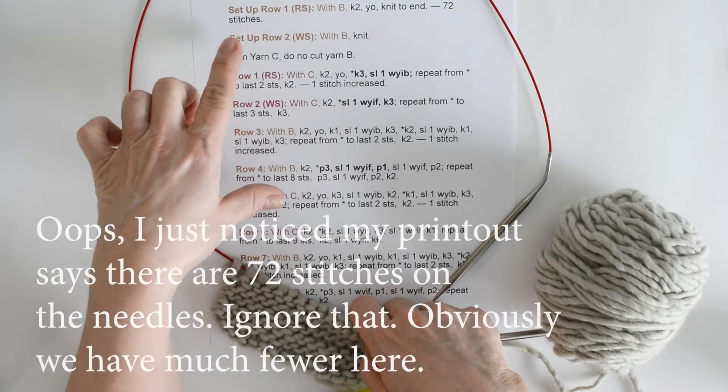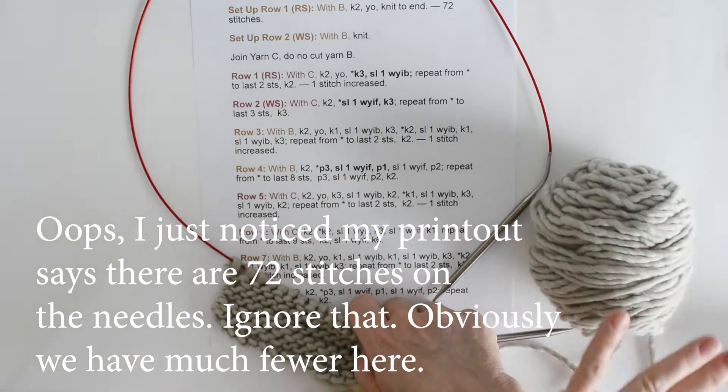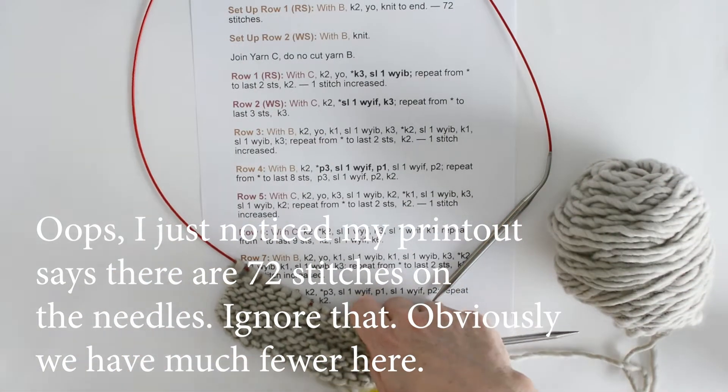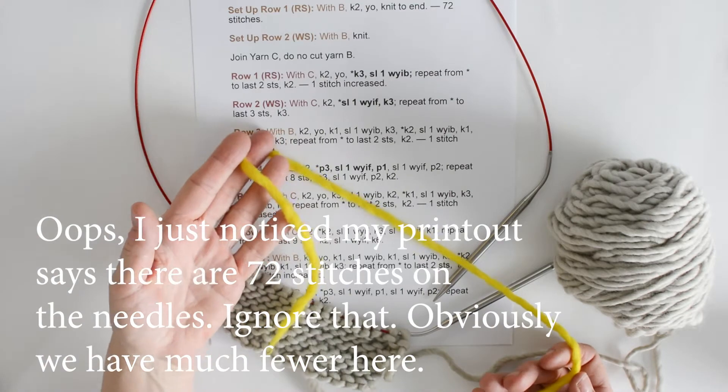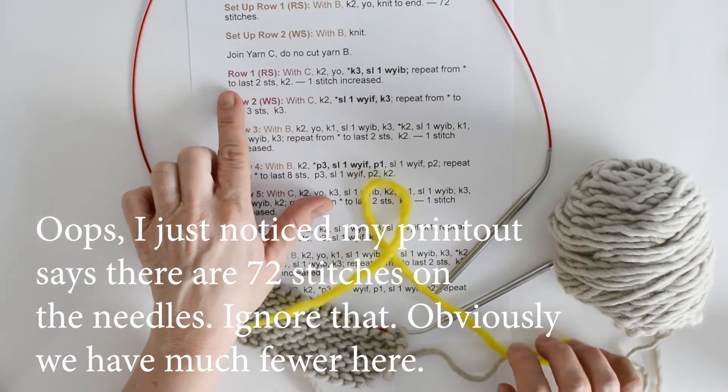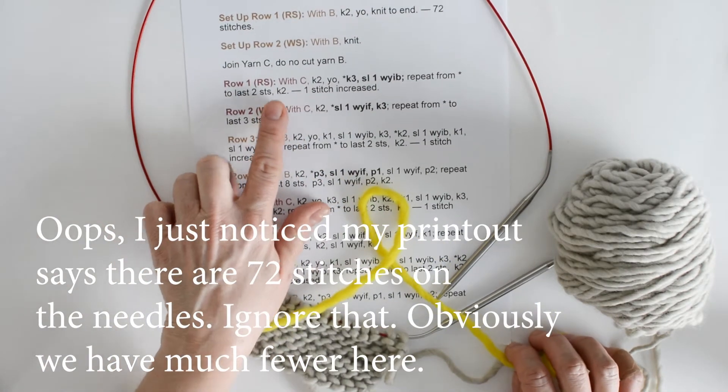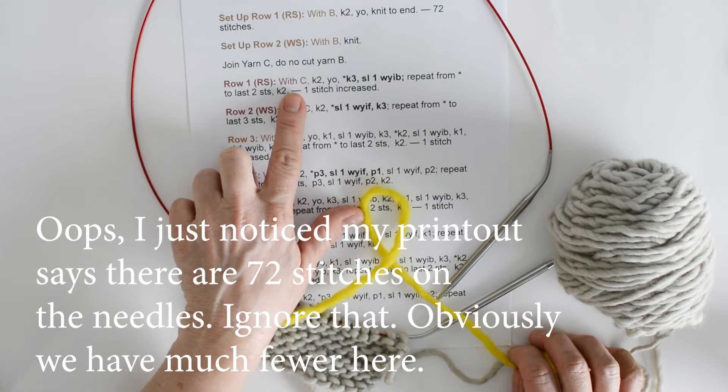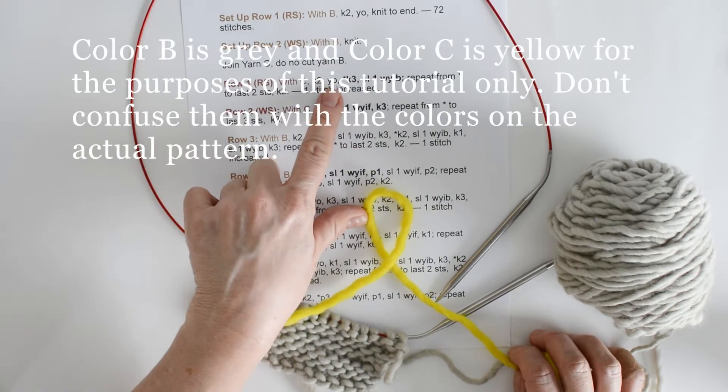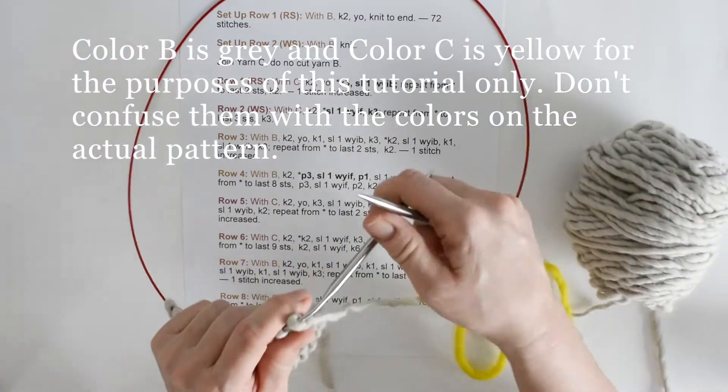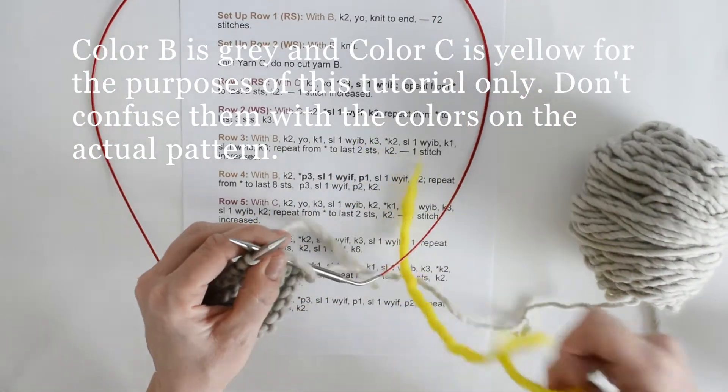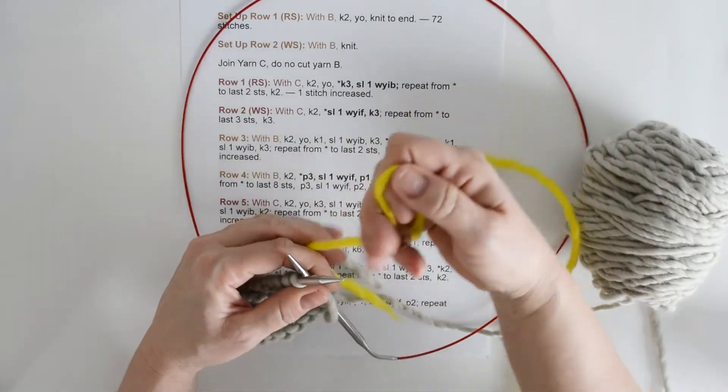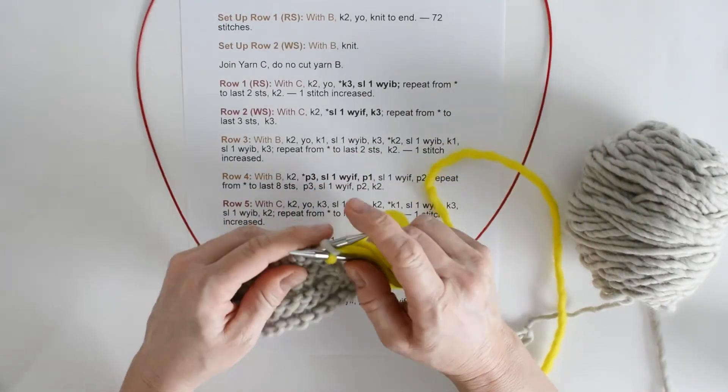I've already done these two setup rows. We're going to call this yarn, yarn B. And the yellow yarn that I'm about to bring in is going to be our yarn C. So row 1 is a right side row, and it tells us with C, knit 2, yarn over. Now to join C, it's really quite simple. We just knit it onto the needle. We don't need to tie it or do anything special.